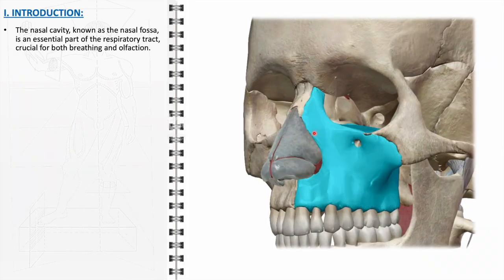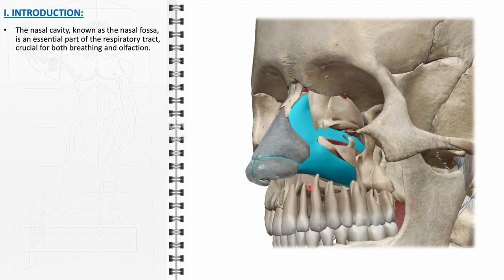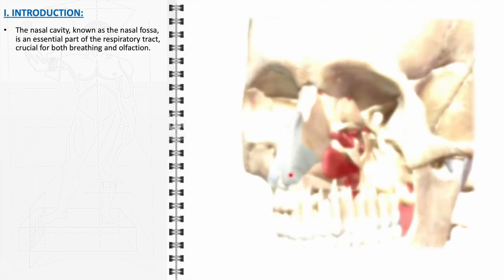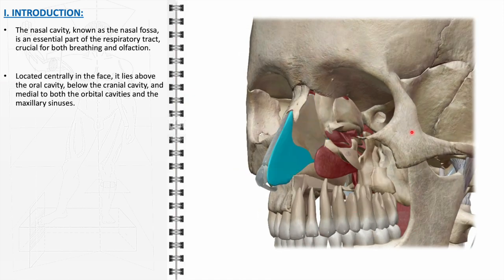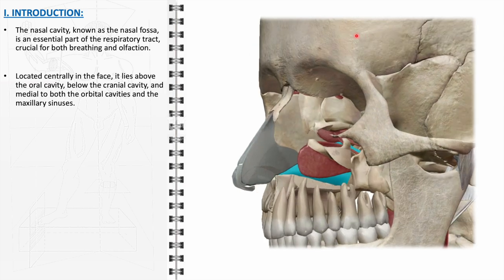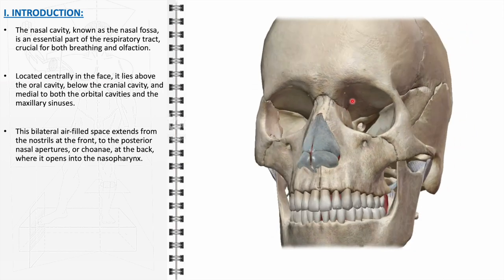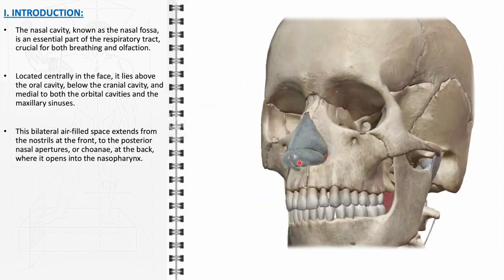The nasal cavity, also referred to as the nasal fossa, is a vital component of the respiratory system, playing a crucial role in both breathing and the sense of smell known as olfaction. Anatomically positioned at the center of the face, it is located above the oral cavity, beneath the cranial cavity, and medial to the orbital cavities and the maxillary sinuses. This placement not only contributes to its respiratory functions but also influences facial structure and aesthetics.